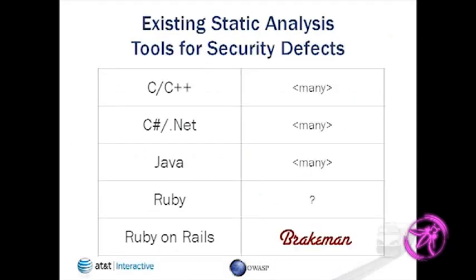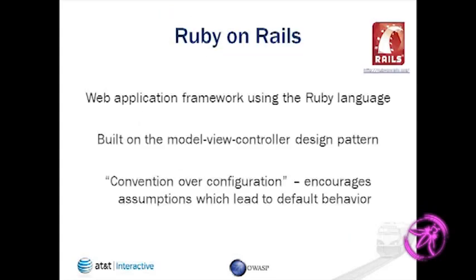There are a lot of tools for C, C++, and C#. It goes all the way back to Lint, Valgrind, which is a free tool. A lot of OWASP vendors cover C# and Java. For Ruby, there are some tools for static analysis but they're not particularly for security. Ruby on Rails had basically no usable tools for finding security defects in the Rails code. That's where Brakeman comes in.